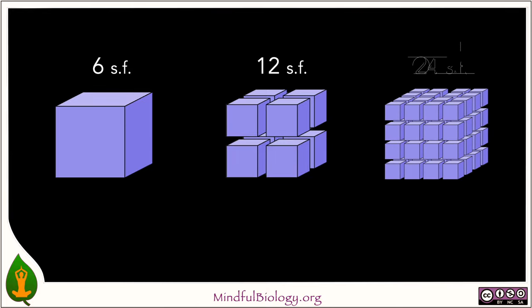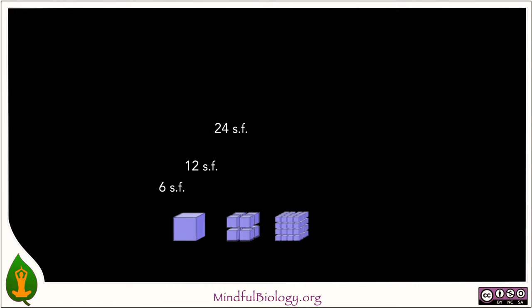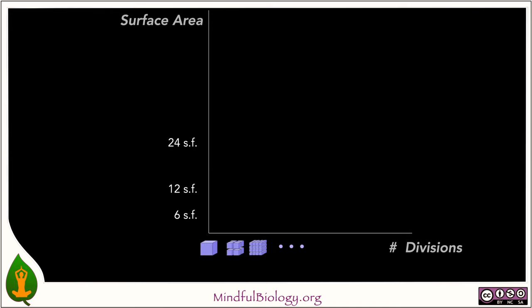If we repeat that process, we now have 64 much smaller boxes and a four-times increase in surface area from where we started. So every time we implement one of these division processes, we get a doubling of surface area. There's a very steep rise in the amount of surface area as the little air sacs are made smaller and smaller.